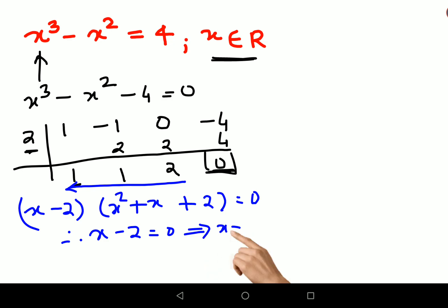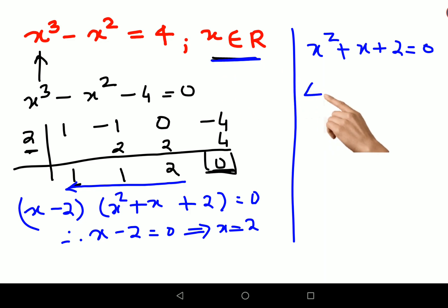So I'll say therefore x-2 = 0, the x value is nothing but just 2, or I can say that x² + x + 2 = 0. Now understand since we have mentioned that x is belonging to real number, so let's find out the delta.